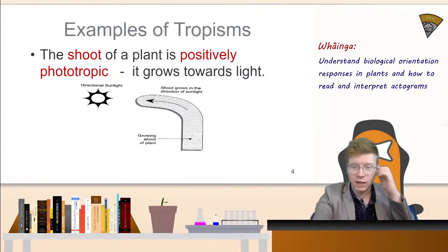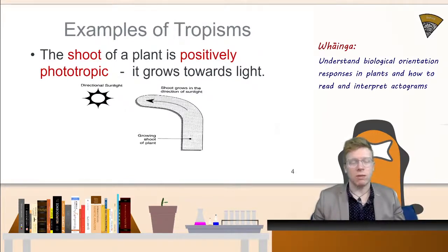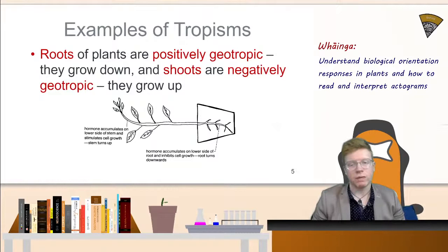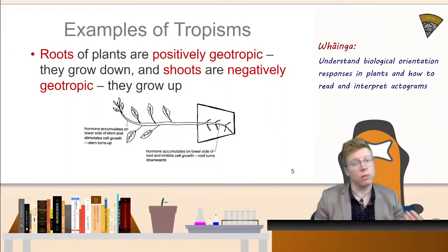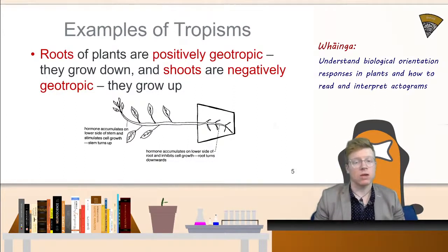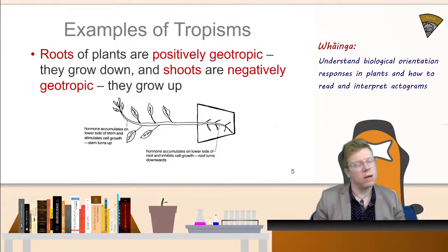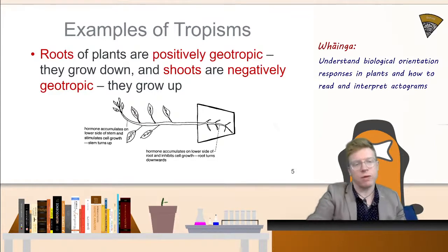A shoot growing up towards sunlight is an example of positive phototropism, because it's growing towards the stimulus of light. Roots growing down in the same direction as gravity show positive geotropism. Shoots, however, are negatively geotropic — they grow against the direction gravity acts. Two different parts of the same organism show different responses to the same stimulus. You want roots to grow deep into the ground and shoots to grow up nice and tall, hence the different responses.